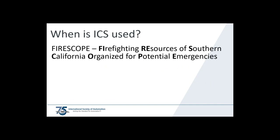An interagency group formed in Southern California calling themselves Firescope — Firefighting Resources of Southern California Organized for Potential Emergencies. They set out to develop two interrelated yet independent systems for managing wildland fire: the Multi-Agency Coordination System, or MACS, and the Incident Command System, or ICS. While the initial focus was on fires, they understood the system would work for any hazard.